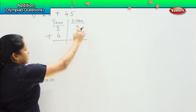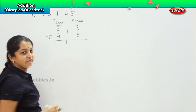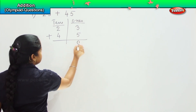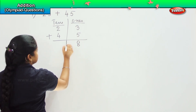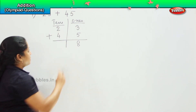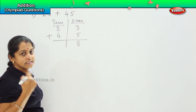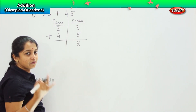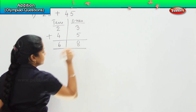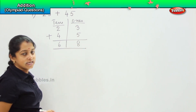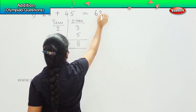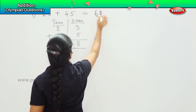So, 3 plus 5: counting up — 4, 5, 6, 7, and 8. There is nothing to carry forward, so we count the tens directly. 2 plus 4: 3, 4, 5 and 6. So my answer is 68. So, 23 plus 45 is 68. Got it?